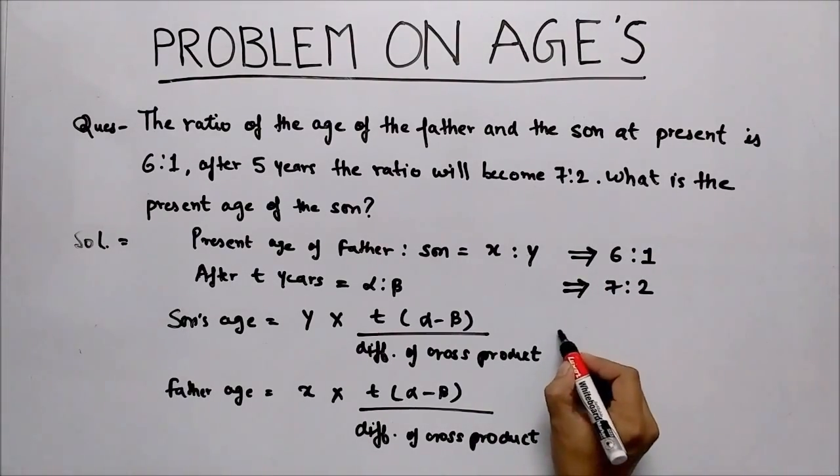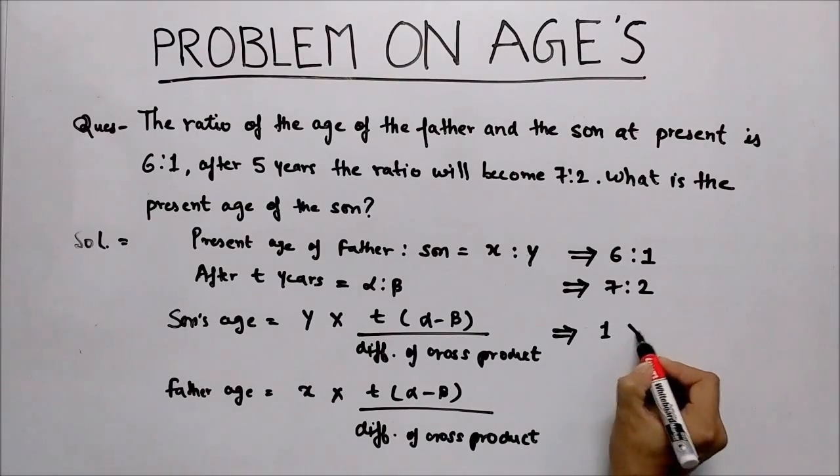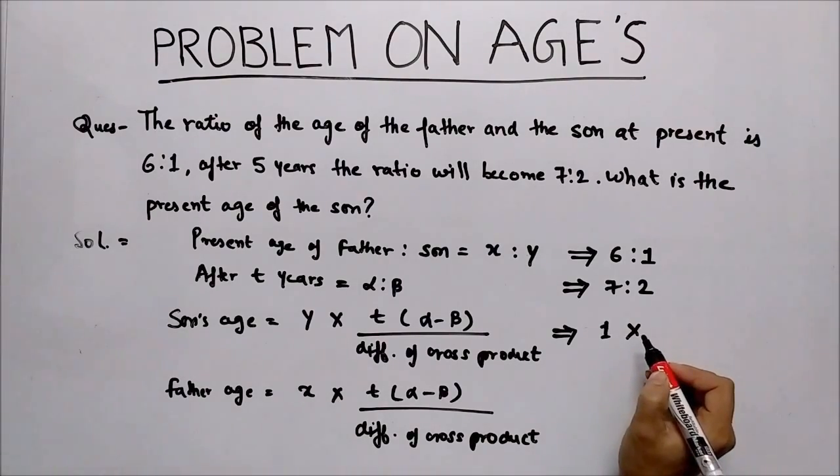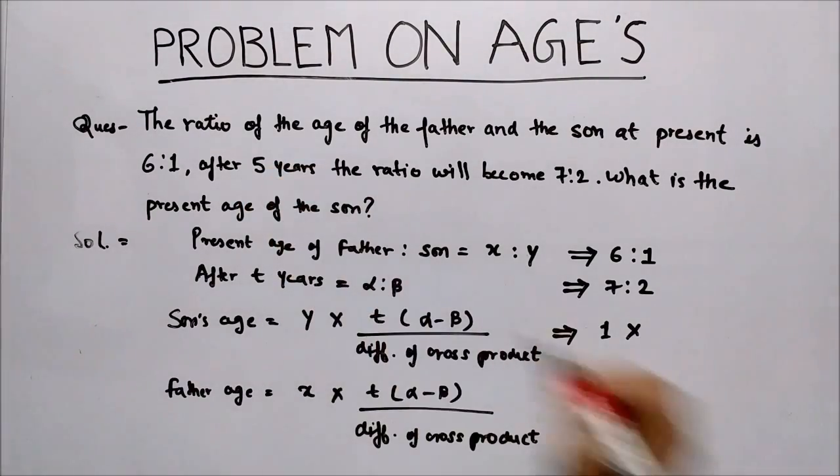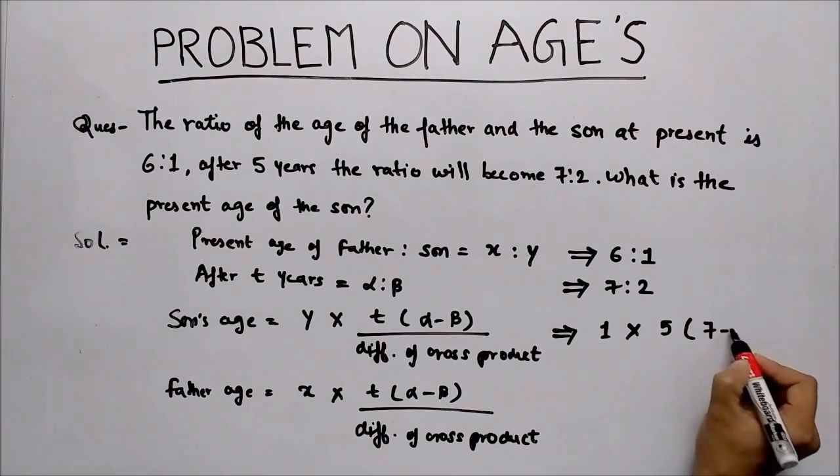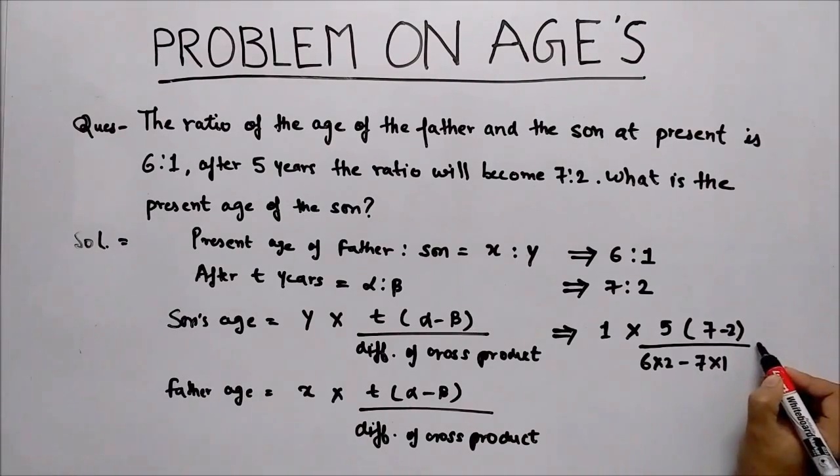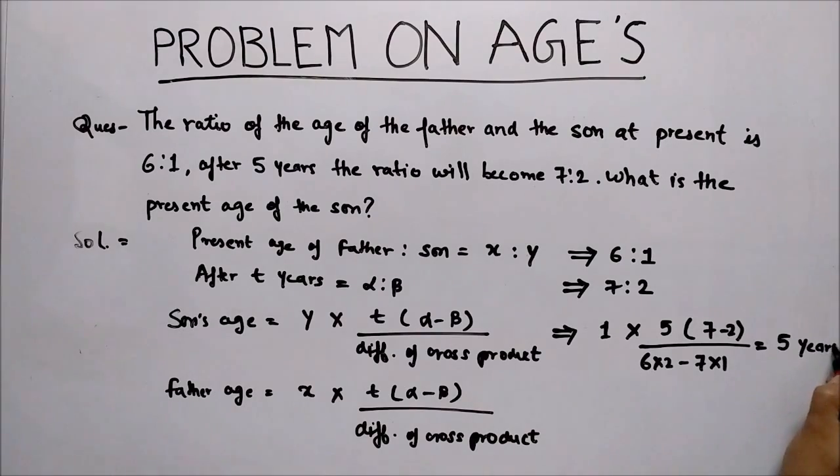Put the values here: y is 1 times t, the number of years is 5, 5 times (7 minus 2) upon (6 times 2 minus 7 times 1). What we get finally after calculating is 5 years.